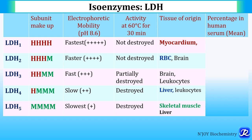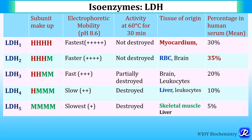Percentage in human serum: LDH1 is 30%, LDH2 is 35% (so LDH2 is more than LDH1), LDH3 is 20%, LDH4 is 10%, and LDH5 is 5%.